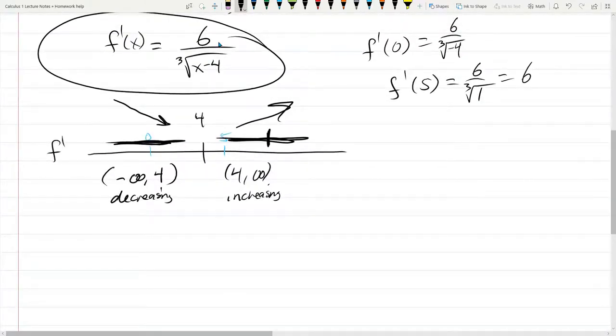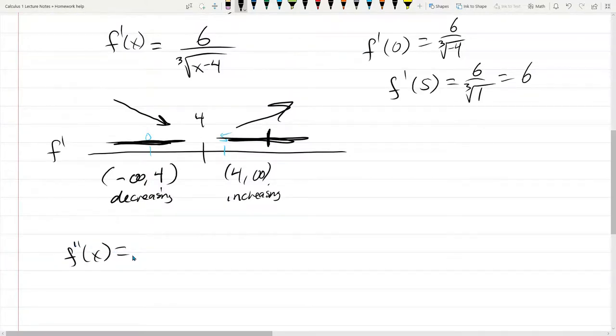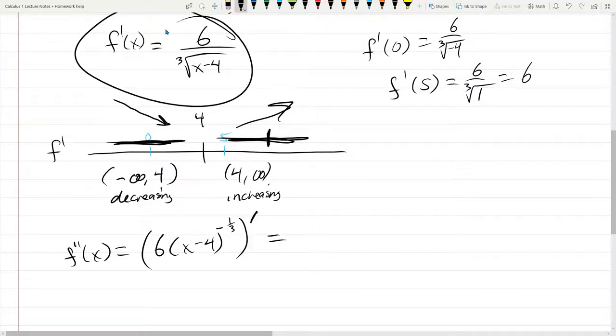Scroll down to get f prime on the screen. f double prime is, well, you know, before we do that, let's just rewrite f prime as 6 times x minus 4 to the negative 1 third. Never write first powers, so that's going to be a prime, not a first power. So I haven't taken derivative yet. I just rewrote f prime in a more conducive way for a derivative.